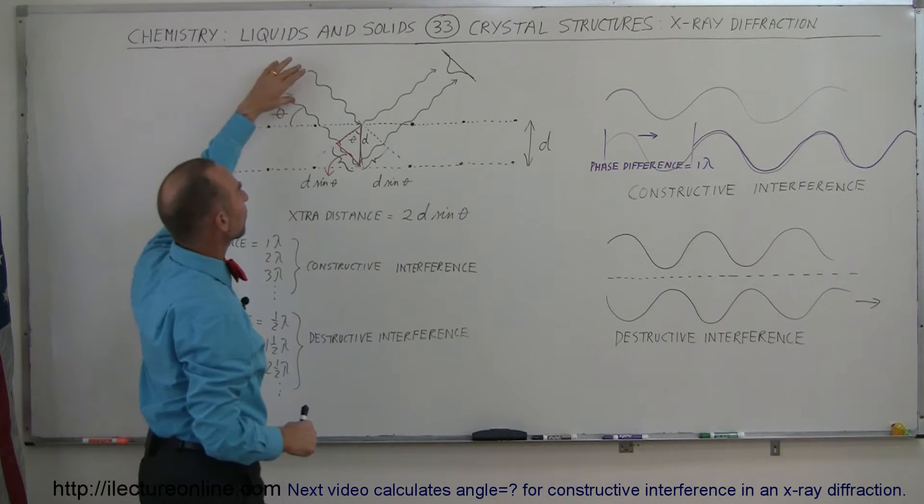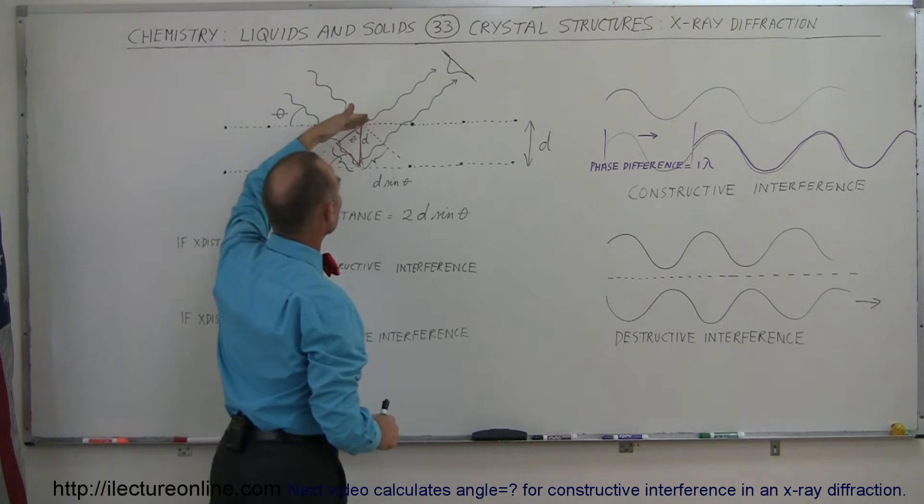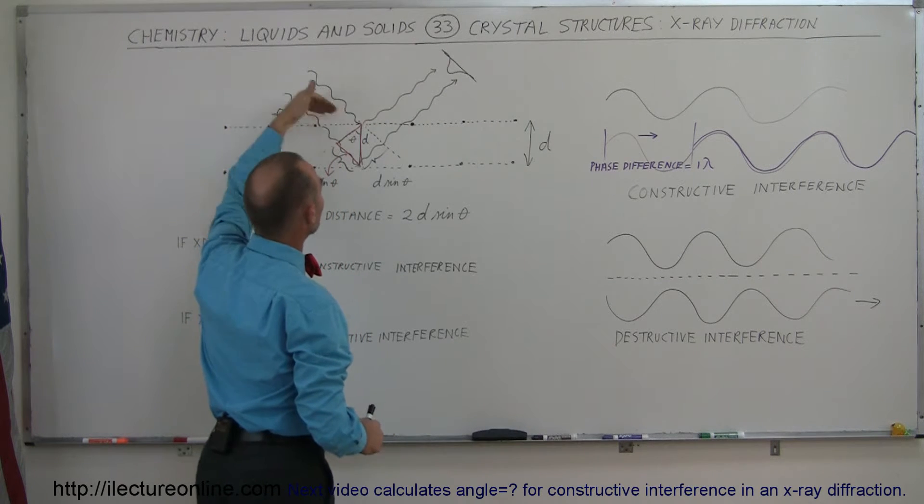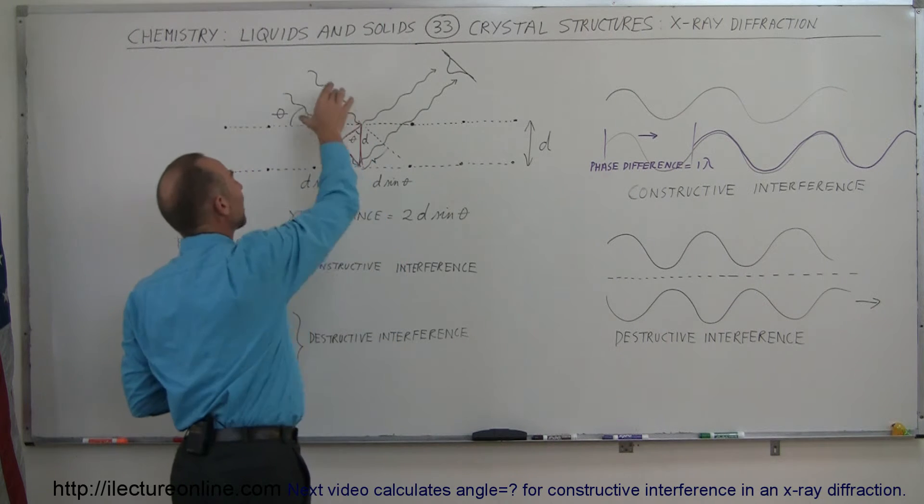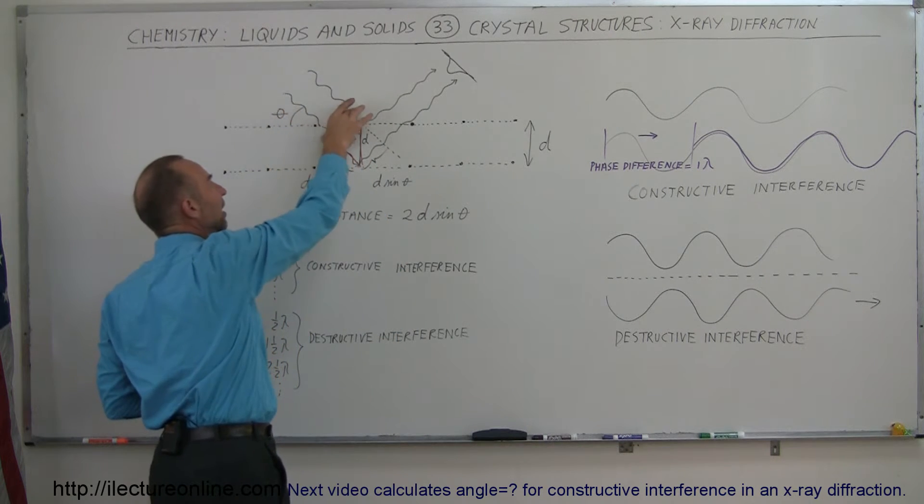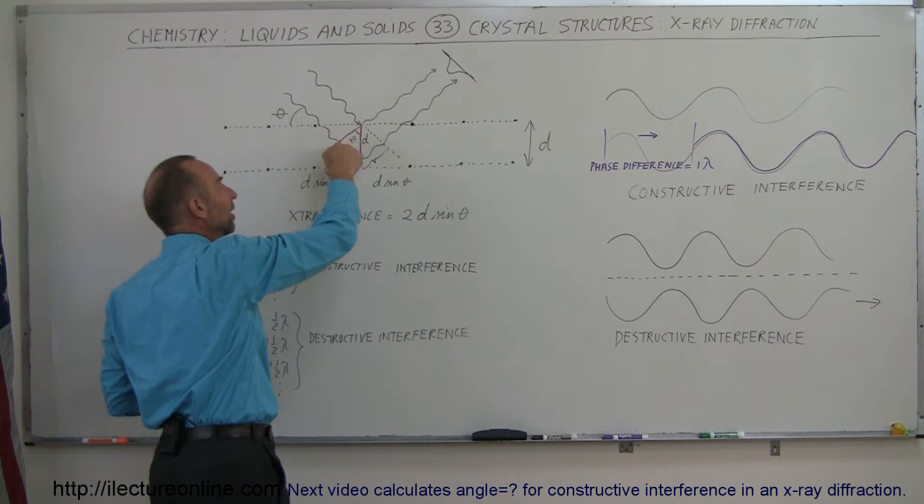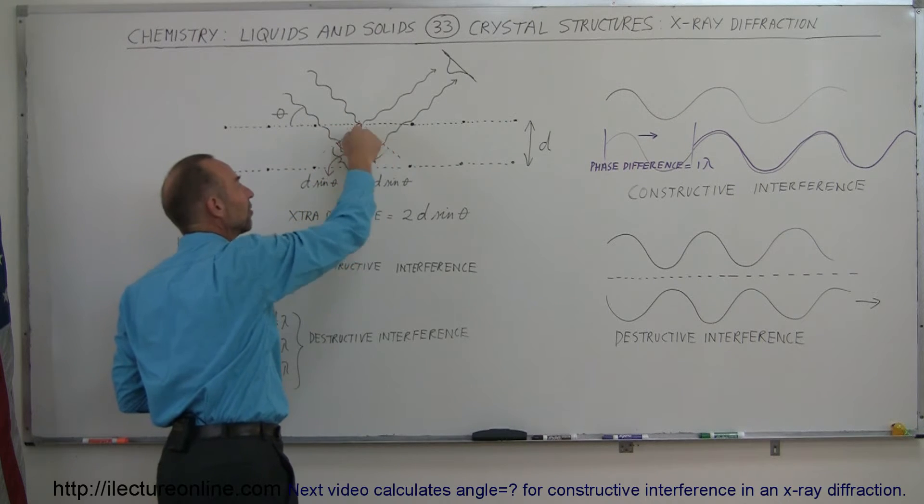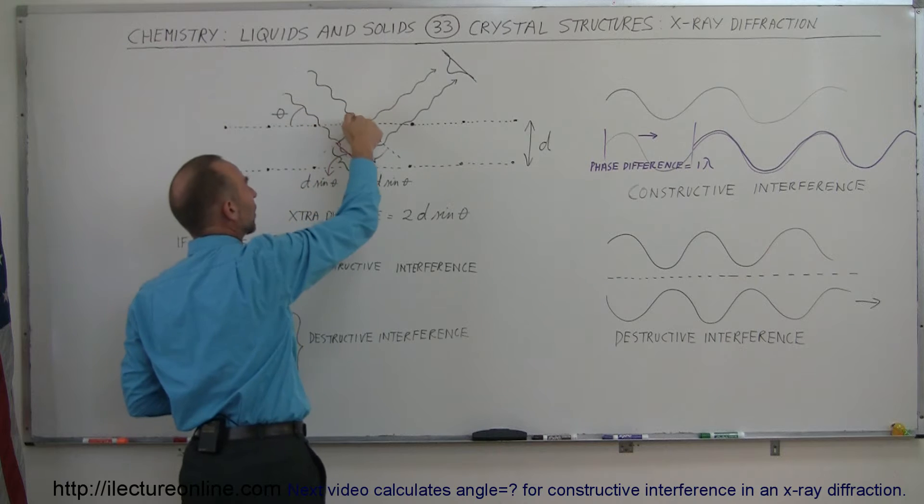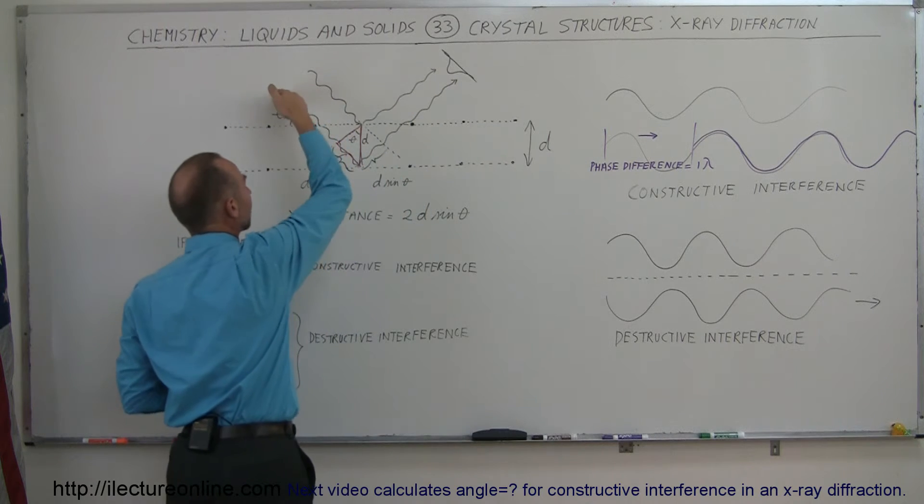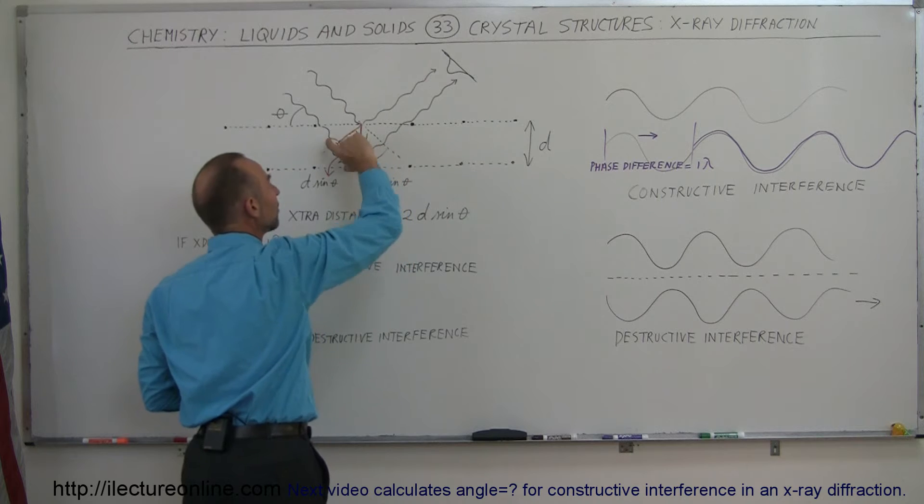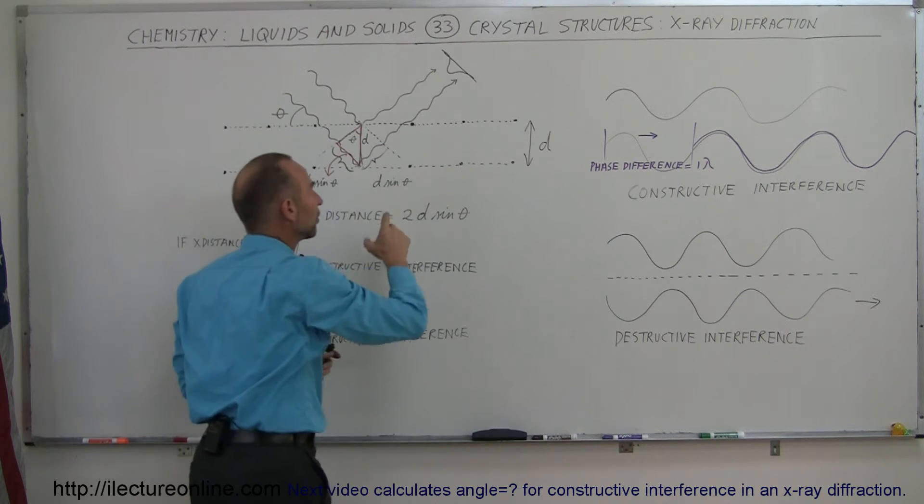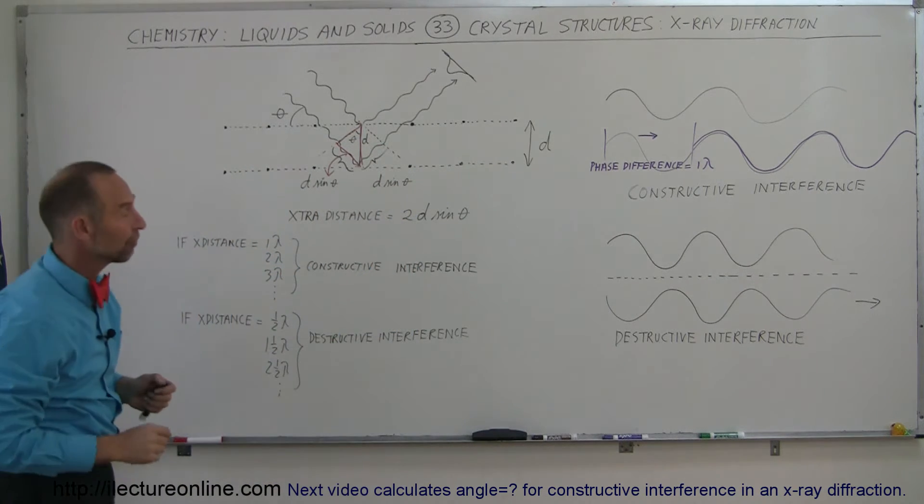And so when we have two beams of X-rays, one scattered out of the first atom and one scattered out of the second atom in the second layer, notice that if the two beams were in phase when they approached, since the second beam has to travel a greater distance than the first beam, this plus this distance combined is the extra distance traveled by the second beam as compared to the first beam.